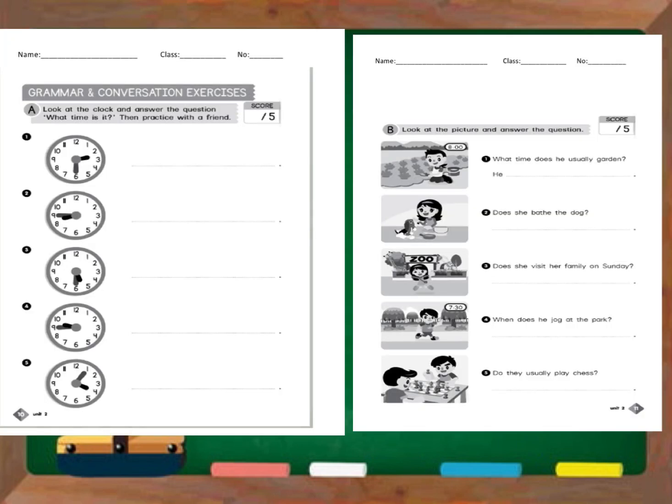So for now, let's have your assignment. For letter A, look at the clock and answer the question. And for letter B, look at the picture and answer the question. So don't forget to write your name, your class and section, and your number.